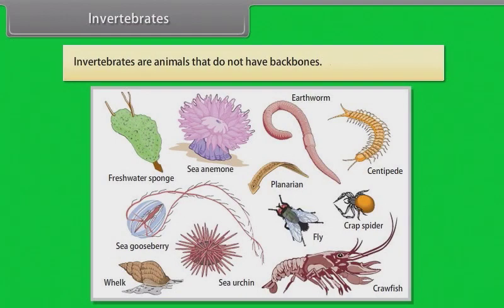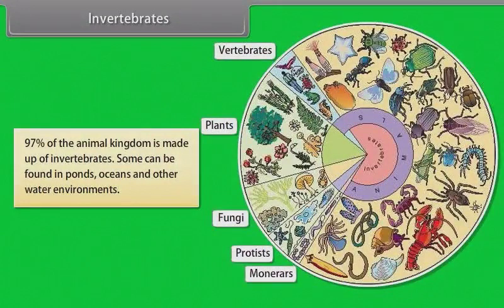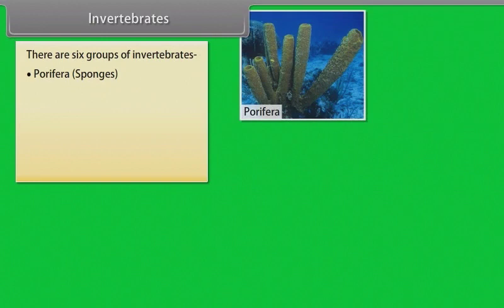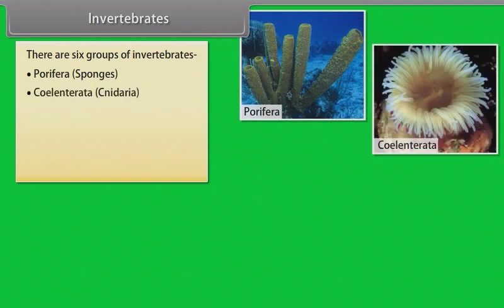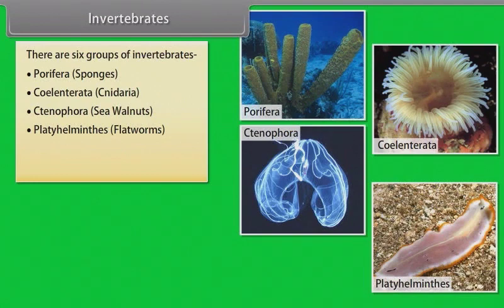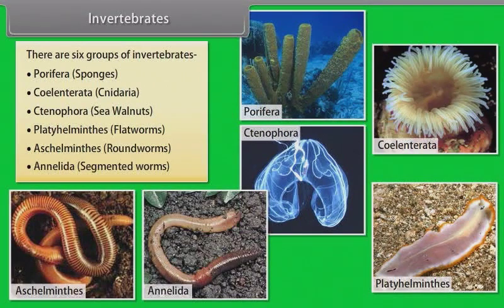Invertebrates are animals that do not have backbones. An exoskeleton is a hard outer covering that protects an animal's body and gives it support. Insects and some other invertebrates have exoskeletons. 97% of the animal kingdom is made up of invertebrates. Some can be found in ponds, oceans and other water environments. There are six groups of invertebrates: Porifera, Coelenterata, Ctenophora, Platyhelminthes, Aschelminthes and Annelida.